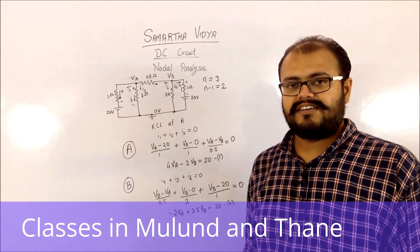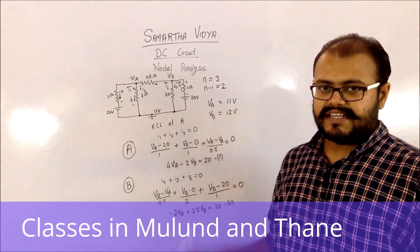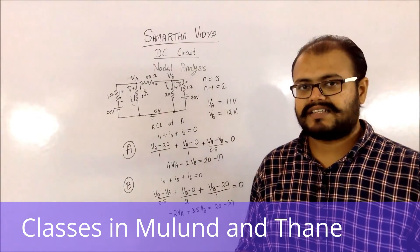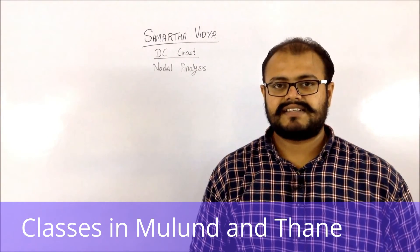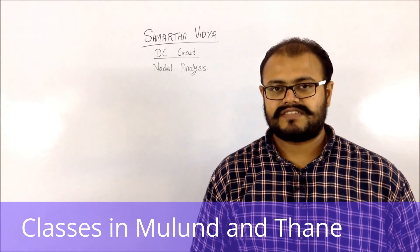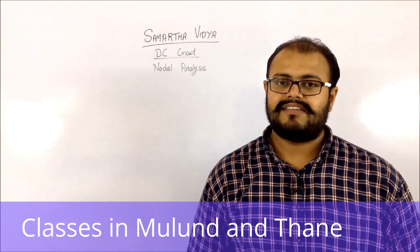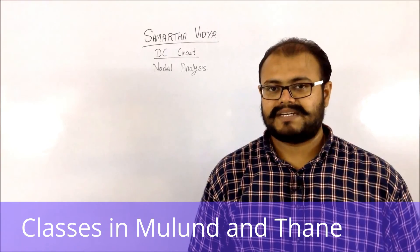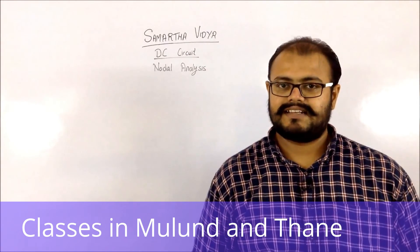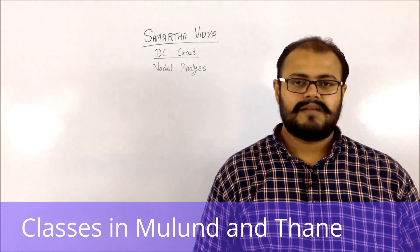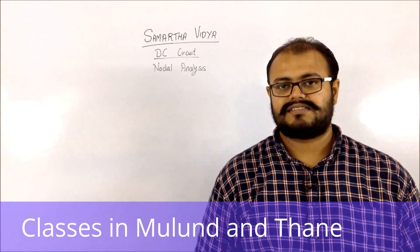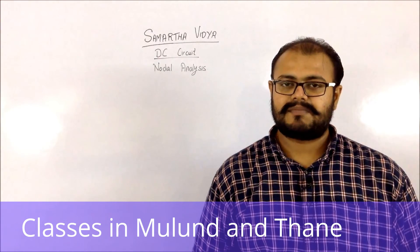Solving Equations 1 and 2 simultaneously, you get the node voltages Va equals 11 volts and Vb equals 12 volts. From these, you can find any parameter asked in the question. Remember that mesh analysis and nodal analysis can be interchanged. Use mesh analysis when there are fewer meshes, and nodal analysis when there are fewer nodes. Nodal analysis is especially helpful when there are many current sources in the circuit. The question itself will usually specify which method to use.